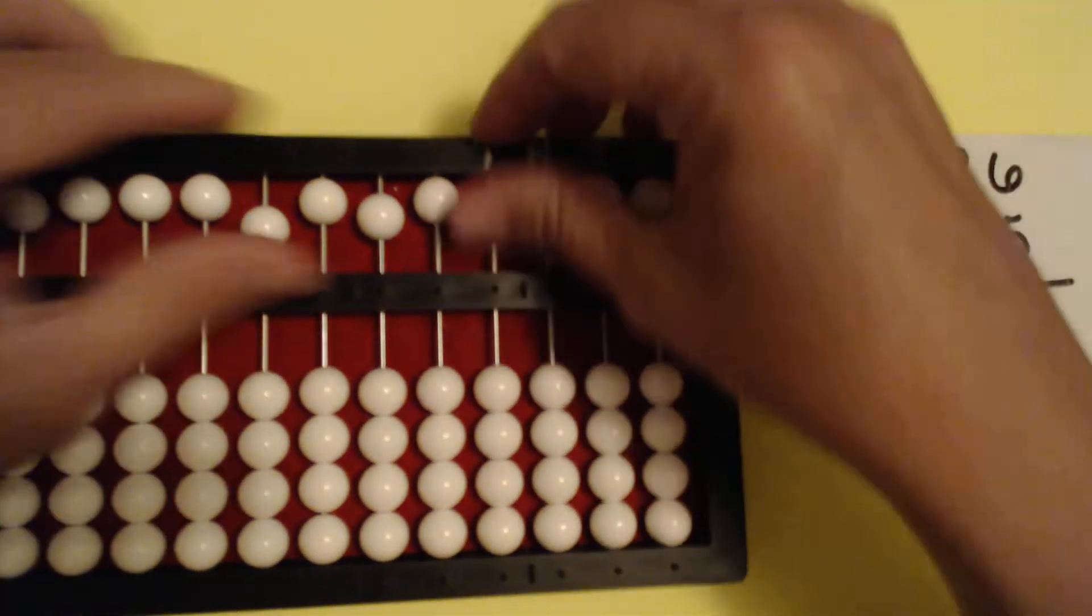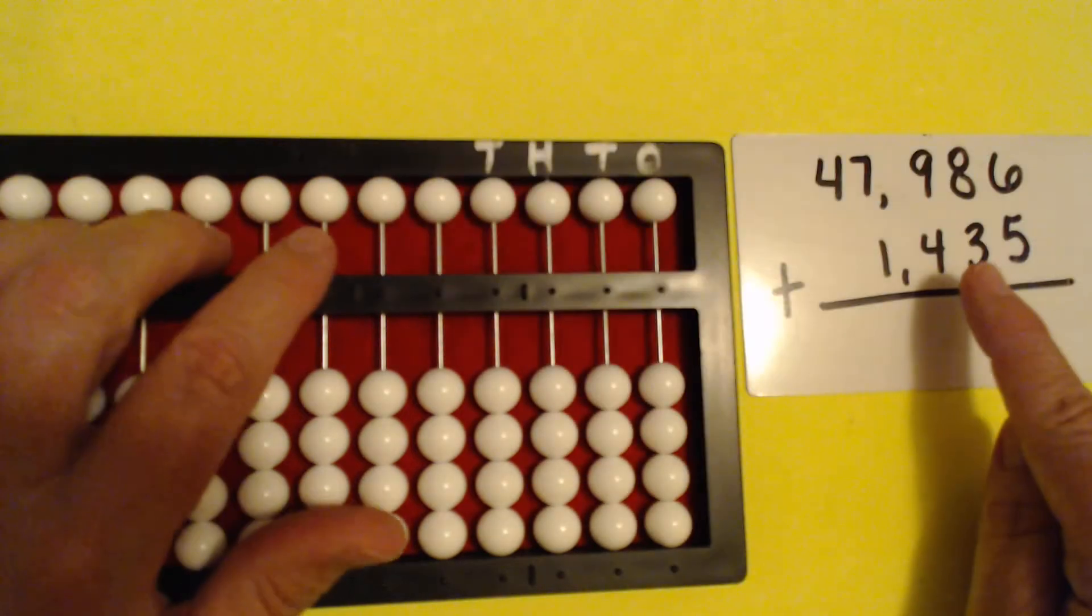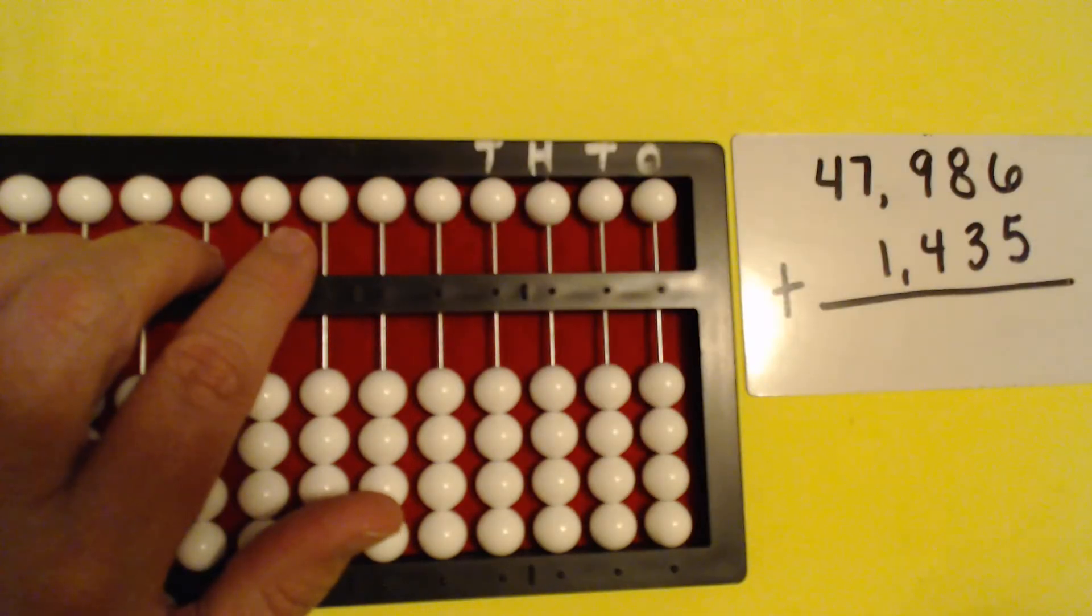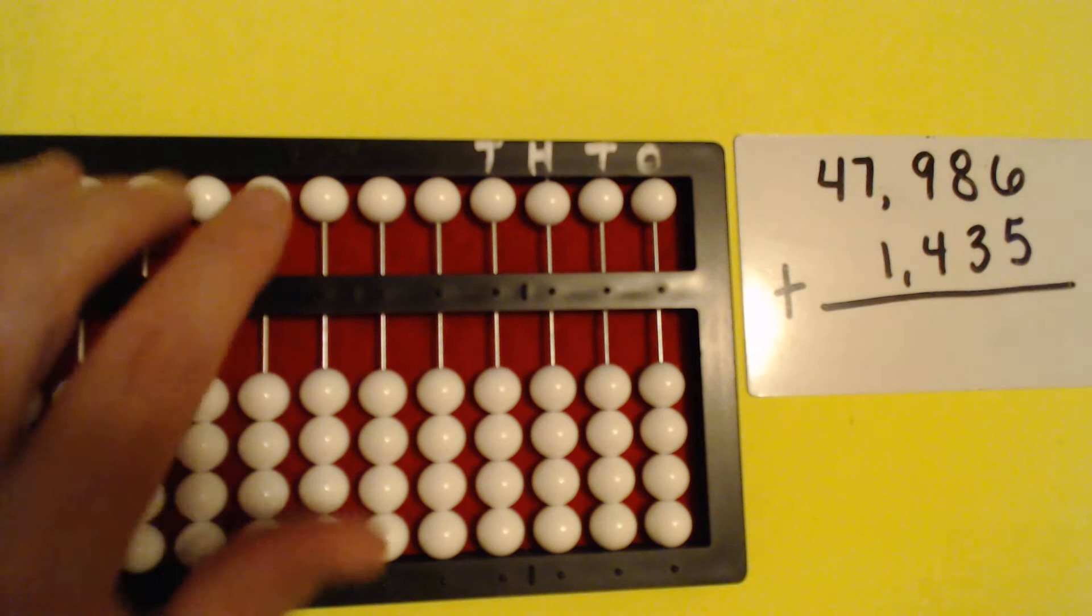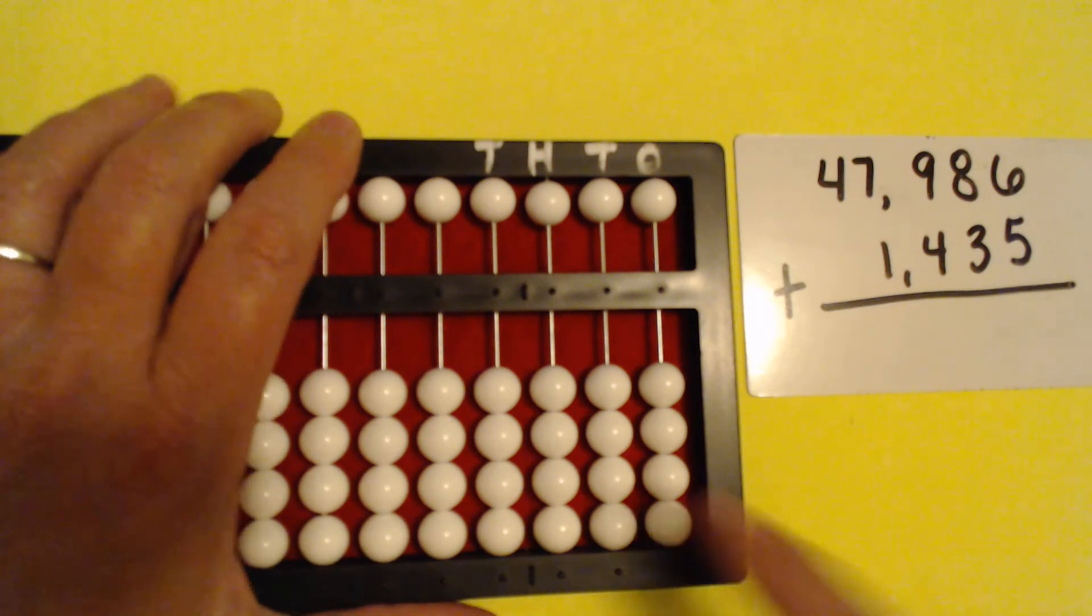So let's make sure it is cleared. The numbers are getting bigger, but the process is still the same. So follow along with me. First we will set this first top number and then we will add the bottom number. Here we go.